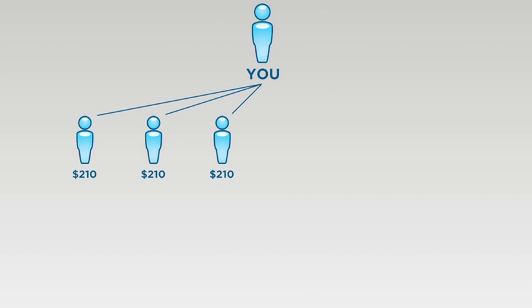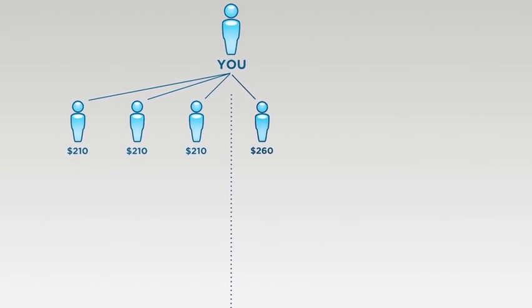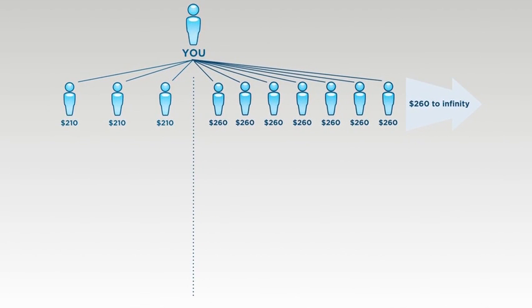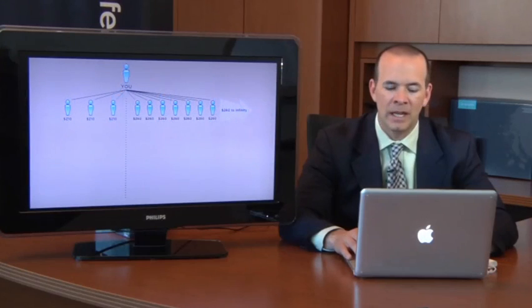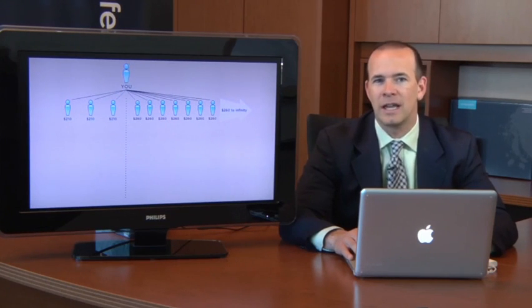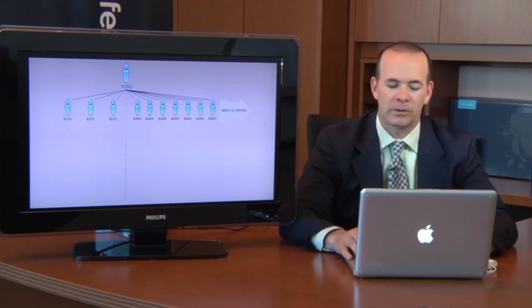But it doesn't stop there, because we're actually going to throw in an additional $50 on your fourth personal enrollee and your fifth and your sixth and your seventh all the way to infinity, paying you $260 every time you enroll somebody at the Vantage Pack level. So this is a great way to make extra income as you share the LifeVantage opportunity and Protanum with others.